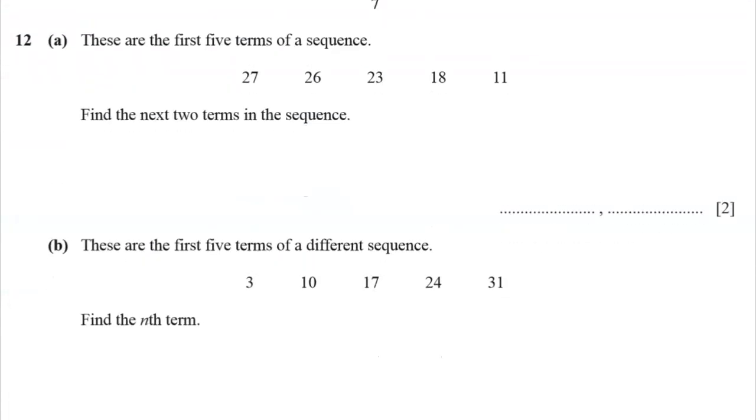These are the first five terms of a sequence. Find the next two terms. Well, what are we doing here? We subtract 1, and then we subtract 3, and then we subtract 5. Let's say that. Minus 1, minus 3, minus 5. And then we subtract 7. Oh, that's good because there's the pattern. So the next two terms, let's subtract 9. If we minus 7, then we want to minus 9 next. And 11 minus 9 is 2. And then we want to subtract 11. 2 minus 11, negative 9. I'm sticking with it.